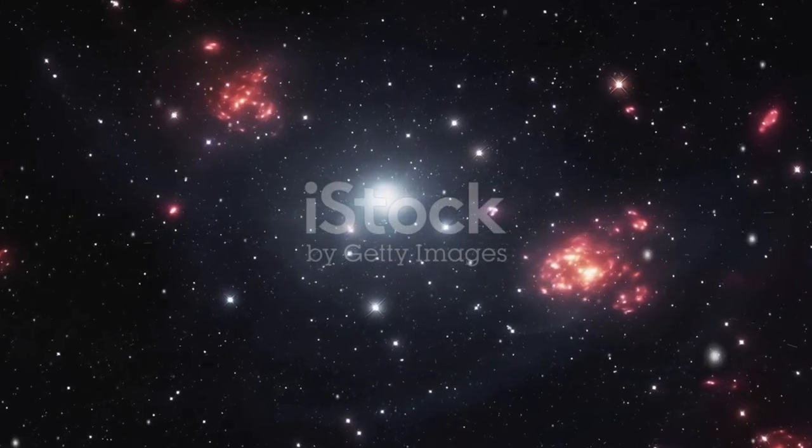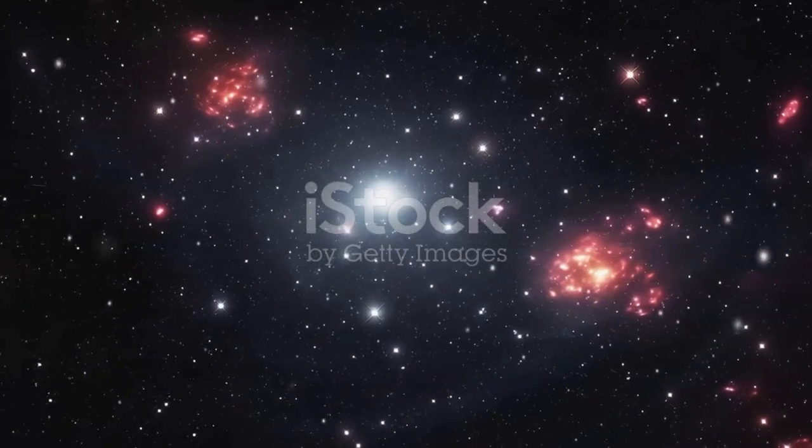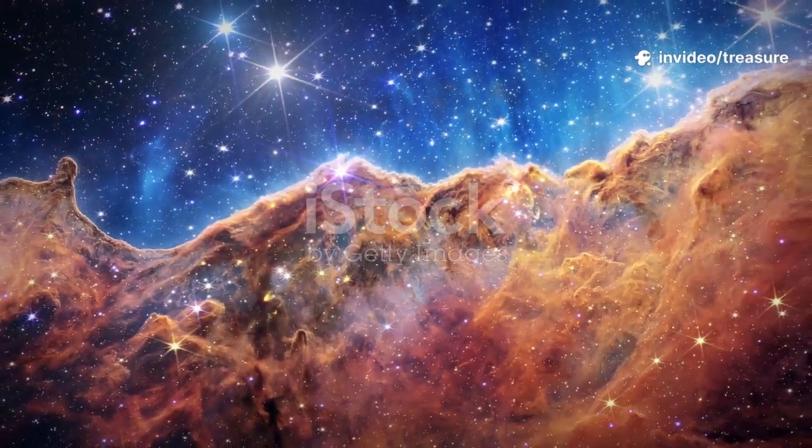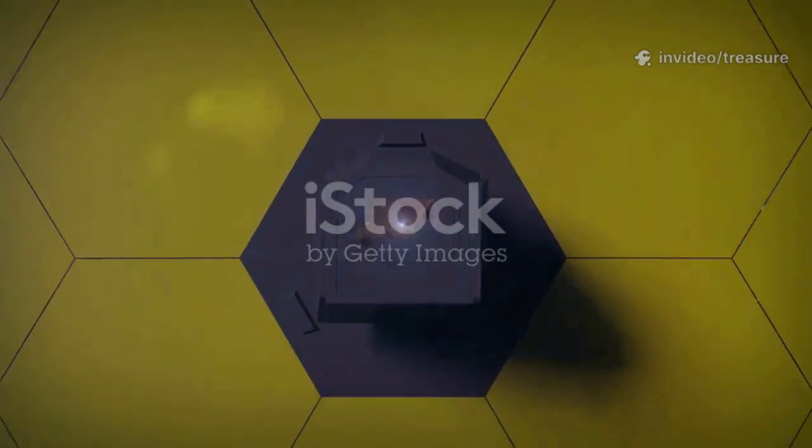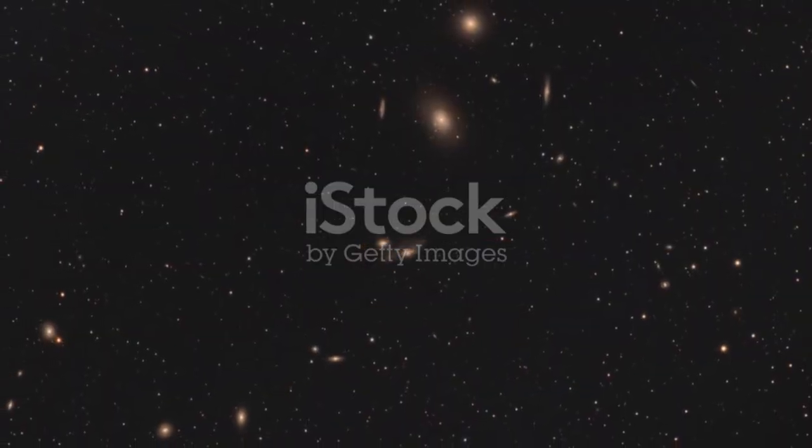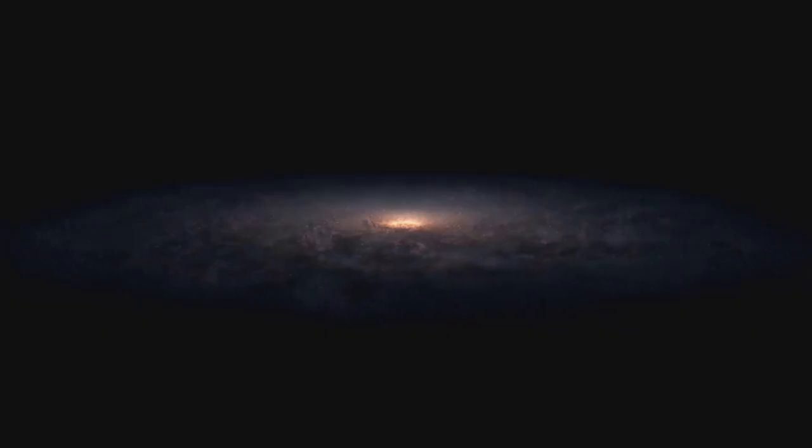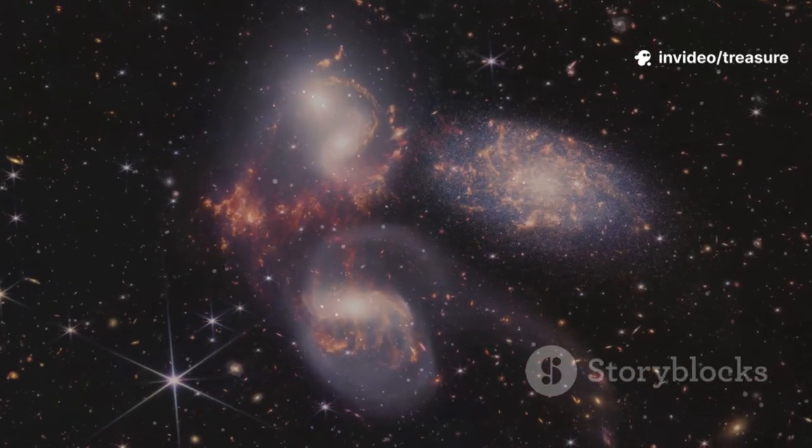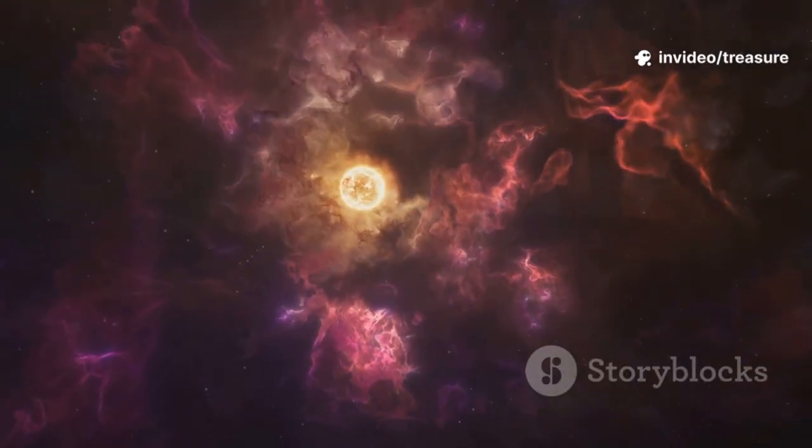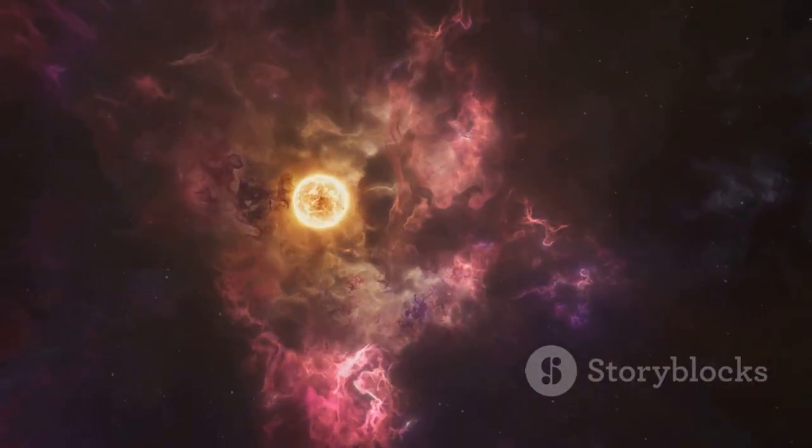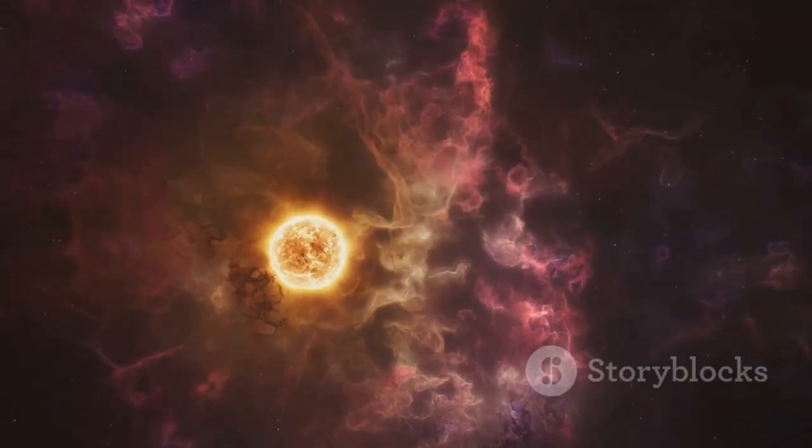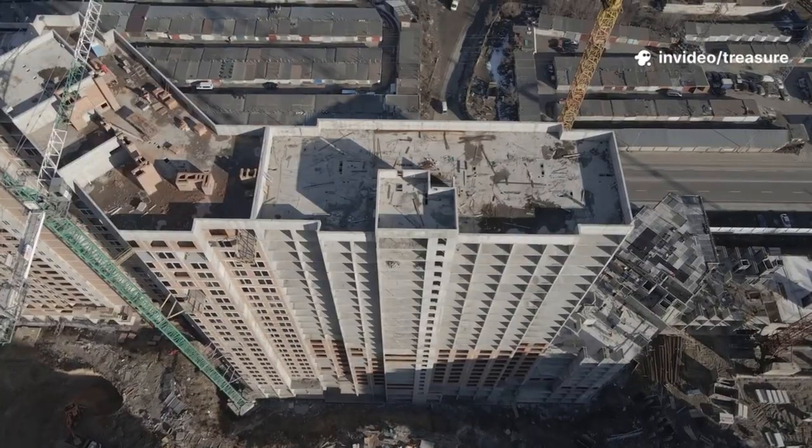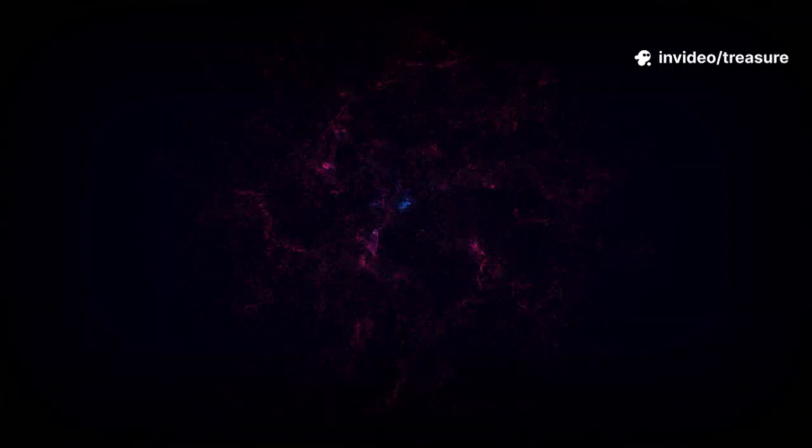The home galaxy of FRB 20240304b is just as fascinating as the signal itself. Thanks to the James Webb Space Telescope, we know it's a small, clumpy dwarf galaxy, buzzing with activity. But what makes it truly special is its age. The signal came from a time when the universe was only about 3 billion years old. Astronomers have a wonderful name for this era, Cosmic Noon. This was the universe's most vibrant and productive period, a time of cosmic rush hour when stars were being born at a furious rate, far faster than they are today. Imagine a city where new buildings are popping up on every corner, every single day. That was the universe during Cosmic Noon.